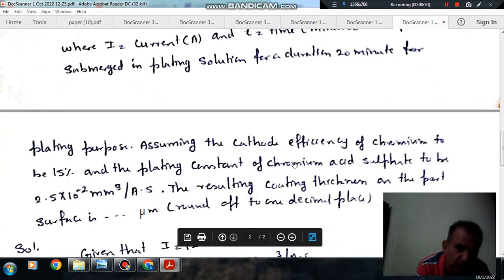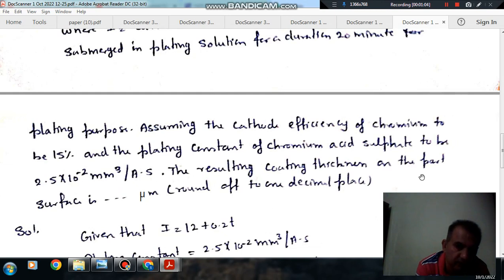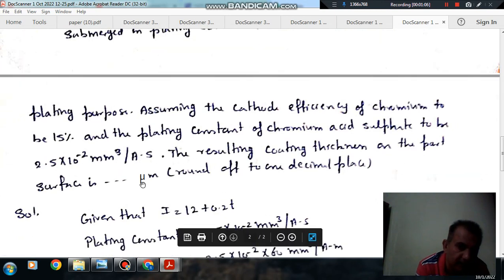Assuming the cathode efficiency of chromium to be 15% and the plating constant of chromium acid sulfate to be 2.5 times 10 to the power minus 2 mm cubed per ampere per second. The resulting coating thickness on the part surface is dash micrometer, round up to 1 decimal.